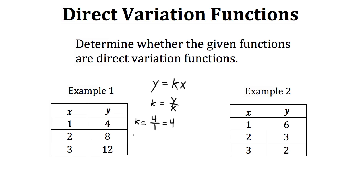Let's double-check the third point. We have k equals the output of 12 divided by the input of 3, which also equals 4. So we know for sure that example 1 checks out as a direct variation function, and the k value specifically for this function is 4.